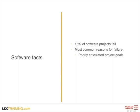They've poorly articulated project goals — they're not clear on what they're doing and why they're doing it. What are we building? Why are we building it? Who's it for? They've poorly defined requirements so it's not actually clear what they're building. Poor communications during the project and also political interference from stakeholders. And one of the reasons that UX has become popular is because UX can mitigate and reduce the risk of these four things happening.